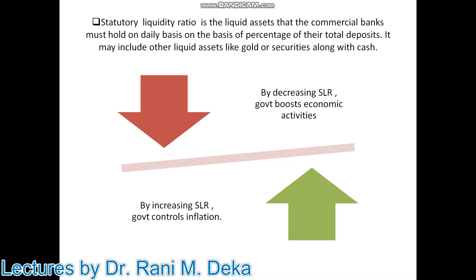It maintains stability in the economy. By decreasing this liquidity ratio, the government can boost economic activities. When the reserve ratio is decreased, commercial banks have the power to create more credit and lend more. On the other hand, when the central bank directs commercial banks to increase their SLR, it is used to control the inflationary situation, as the monetary supply increases in the economy.